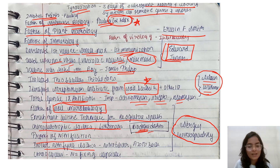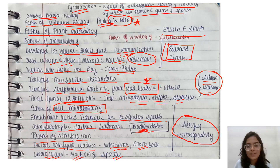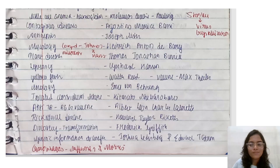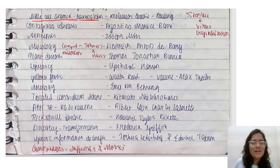Sergei Winogradsky developed enrichment culture techniques for Beggiatoa species and autotrophic bacteria, and worked on biodegradation, nitrification, and denitrification. He isolated nitrifying bacteria: Nitrobacter. Chorococcus has a high nitrogen-fixing capacity. Sickle cell anemia is a hemoglobin-related disorder — a molecular disease.